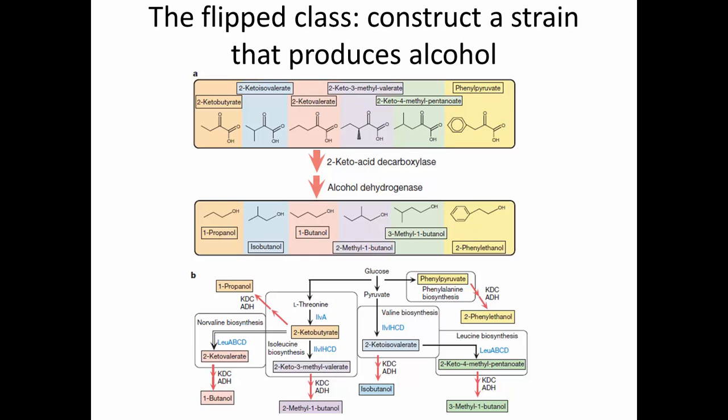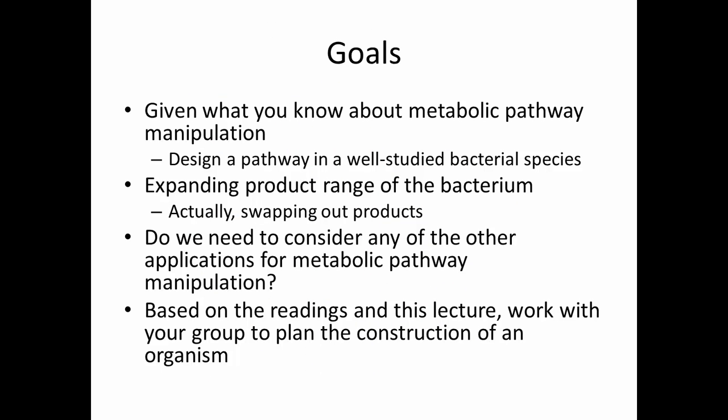The flipped class activity is essentially this: we're constructing a strain of Ralstonia eutrophia that produces alcohol instead of polyhydroxyalkanoate. We have the beginnings of a strain by deleting the PHA synthesis pathway. Where do we go from there? How do we harness that pyruvate into making the molecules that we want? In the readings, you will essentially see a parts list of what we can put into a recombinant Ralstonia eutrophia in order to make a strain that produces higher alcohols like isobutanol, and you will be asked questions about that.